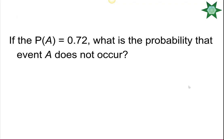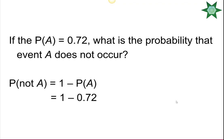If the probability of A is equal to 0.72, the probability that event A does not occur is 1 minus 0.72, which equals 0.28.